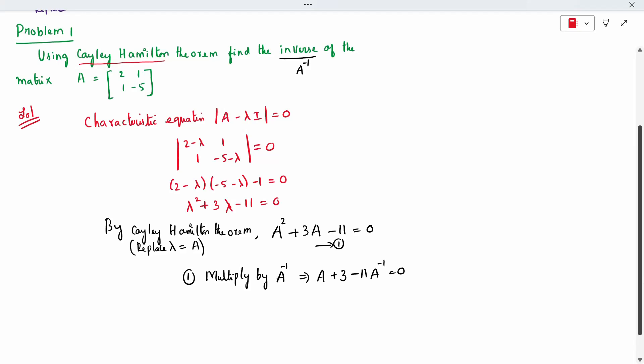Now I need the answer A inverse. A inverse you bring to the other side, remaining every term to the another side. So 1 by 11 into A plus 3 into I. So this is our A inverse by Cayley.